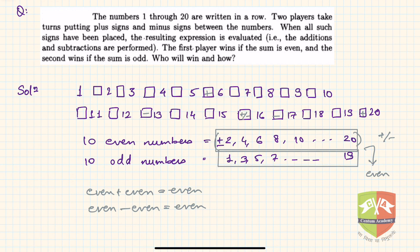Now come to the odd part. Odd numbers are 1, 3, 5, 7. Again these numbers will be associated with either plus or minus signs. Now we have 10 odd numbers, so basically I have 5 pairs of odd numbers, isn't it? 5 pairs of odd numbers.